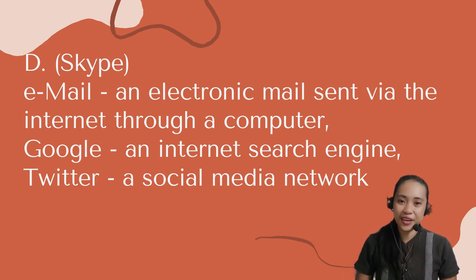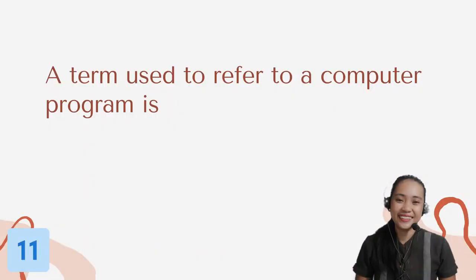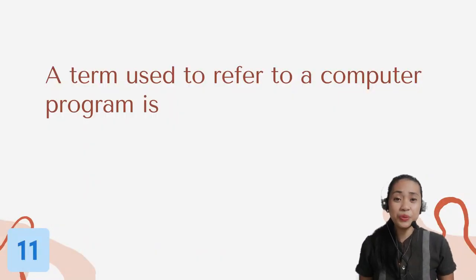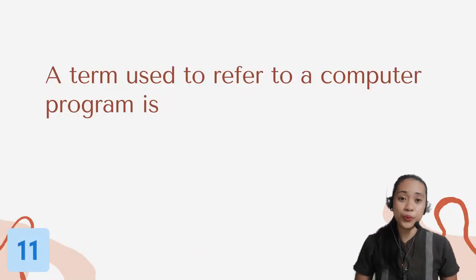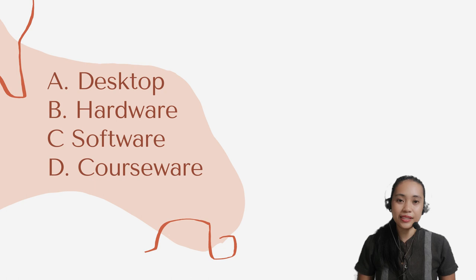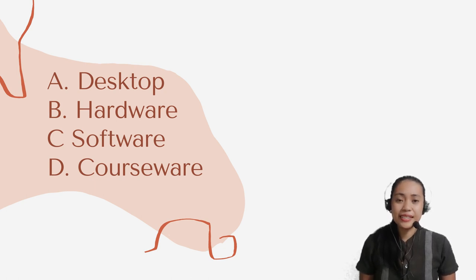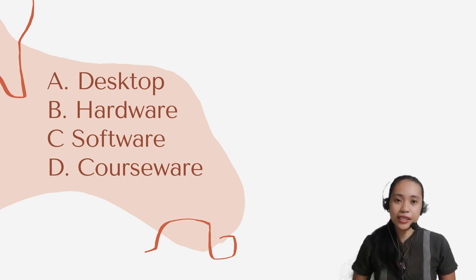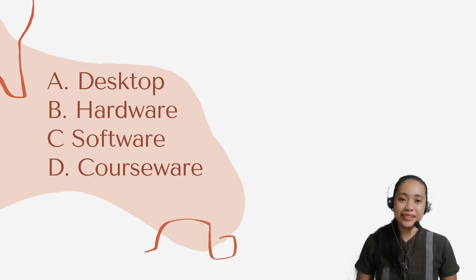Question number 11. A term used to refer to a computer program is: Letter A: Desktop. B: Hardware. C: Software. Or letter D: Courseware.